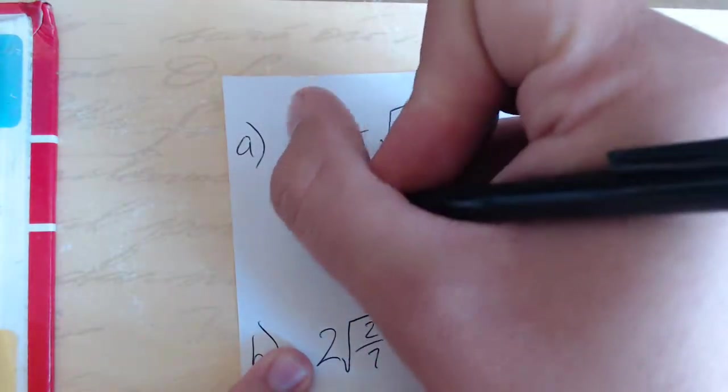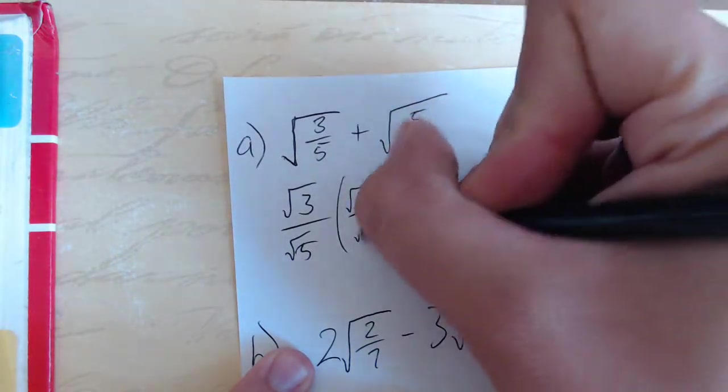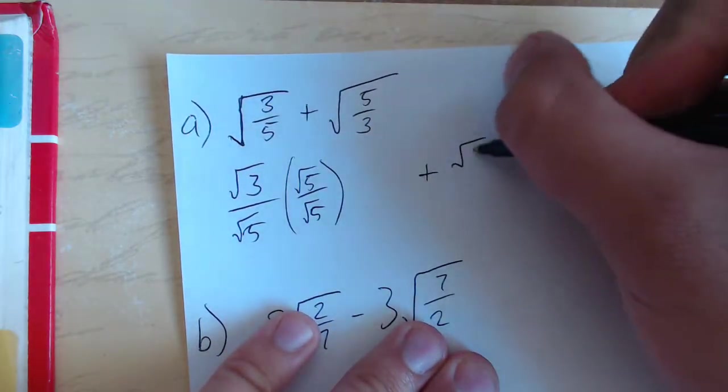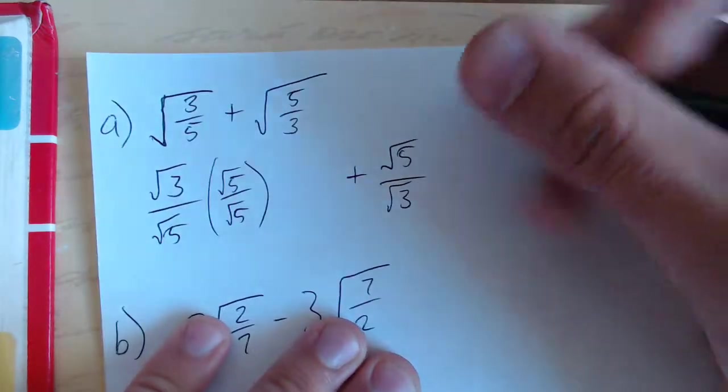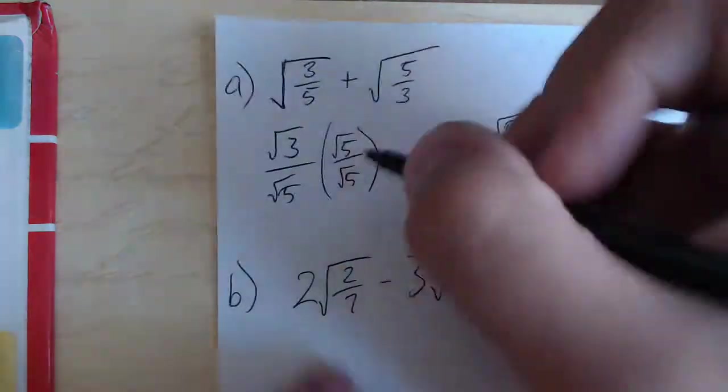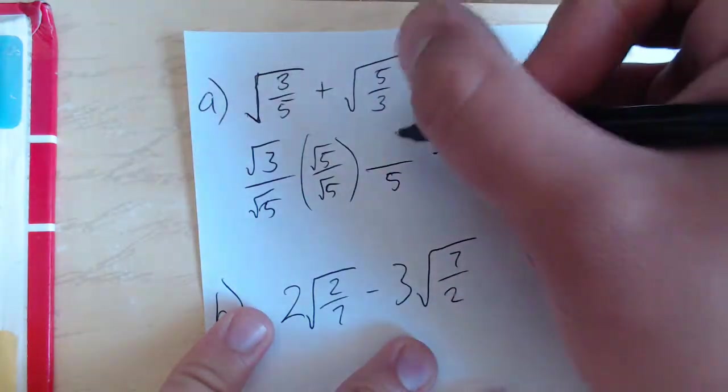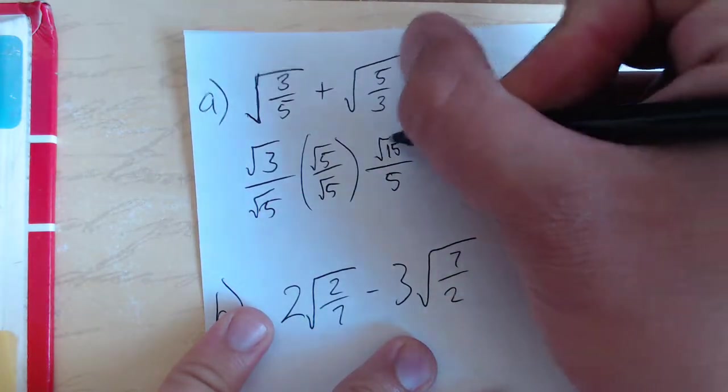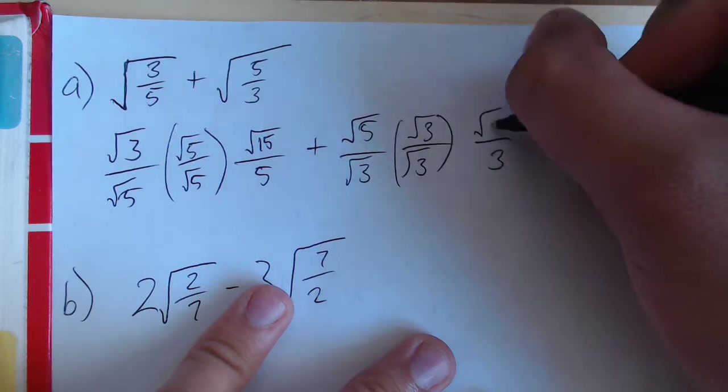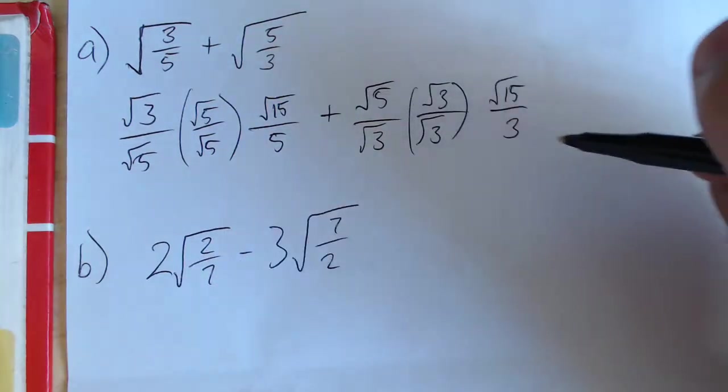So if we take root 3 over root 5 and multiply it by root 5 over root 5, that'll rationalize it. And then we're going to add that to the square root of 5 over square root of 3 multiplied by root 3 over root 3 to rationalize that one. When we multiply this one, root 5 times root 5 just gives us 5. Root 3 times root 5 gives us the square root of 15. And then over here we see something similar. The denominator becomes 3 and the numerator becomes root 15. So now we've got good denominators and we've got some rationalized fractions, so we can go ahead and add these two numbers.